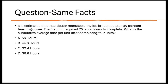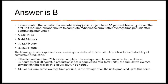Same facts: 'What is the cumulative average time per unit after completing four units?' We know after two units the cumulative average was 56 hours. If production is doubled again to four total units, the cumulative average completion time will be 80% of 56, which is 44.8 hours. So 44.8 hours is our cumulative average time per unit — the average of all units produced up to this point — assuming an 80% learning curve. Letter B is correct.